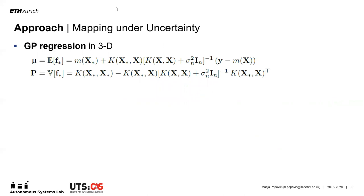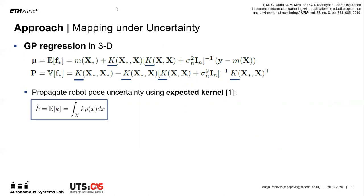For mapping, we use the GP to represent a continuous 3D field in an environment. Given a set of measurements, the field values are inferred using standard GP regression. To propagate the pose uncertainty into the model, we use the expected kernel technique. Essentially, this method integrates over uncertain inputs to build the kernel matrices in the regression equations.